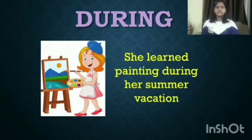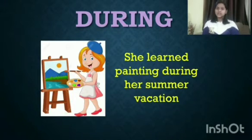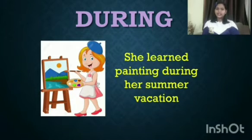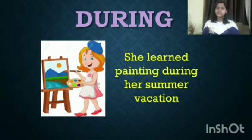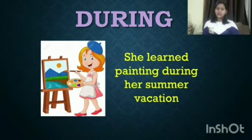The preposition of time 'during' is used to tell the time when something is happening. For example, 'She learned painting during her summer vacation.' Here, 'during' is telling us that she learned painting in her summer vacation. In that way, we can easily understand the preposition of time 'during'.